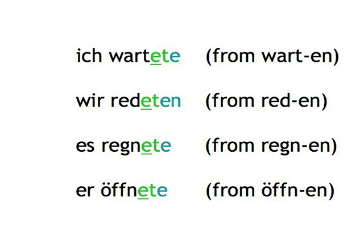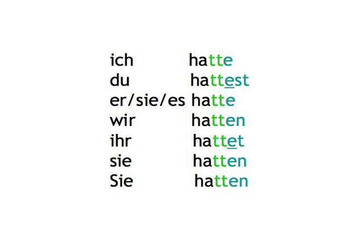The simple past of the verb haben, by the way, is formed like a regular verb too, except that we assimilate the B in the stem to a T and thus get ich hatte, du hattest, etc.